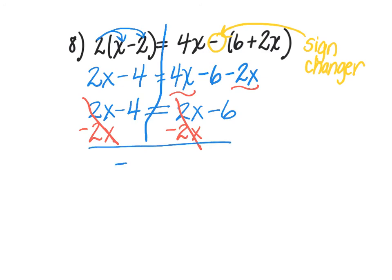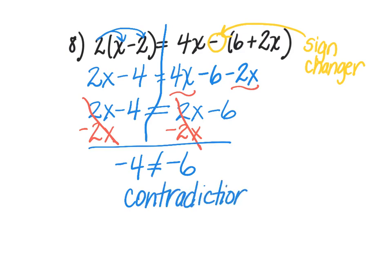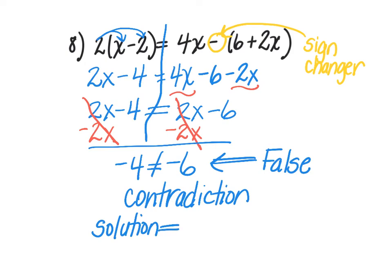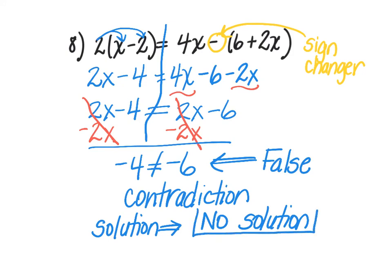The 2x's zero each other out on both sides, and I'm left with the statement negative 4 is equal to negative 6. Well, that is not true. This is called a contradiction — a false statement. Whenever you have an equation that leaves you with a false statement, a contradiction, the solution is no solution. That means no number will work when I plug it in — nothing works. So the answer to this problem is no solution.